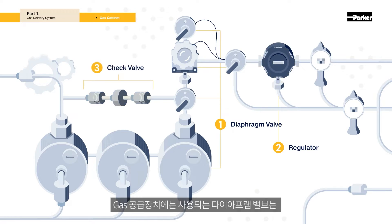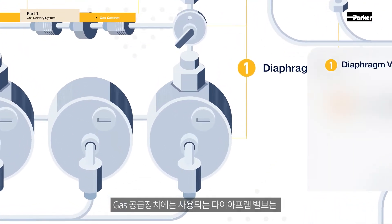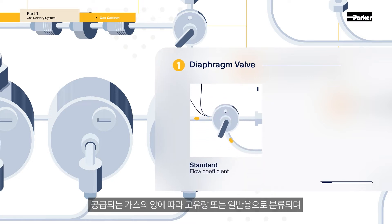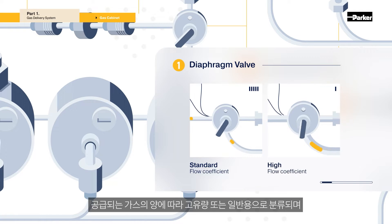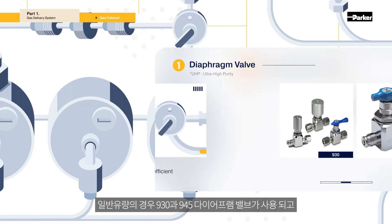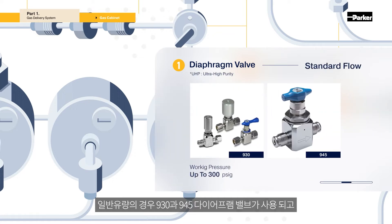The diaphragm valve used in the gas supply system depends on the supplied amount of gas. It is classified into high and standard flow capacity, and there are differences in the types of products. For standard flow capacity, 930 and 945 diaphragm valves are used.